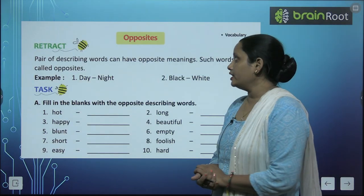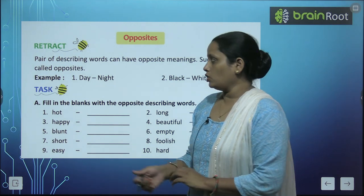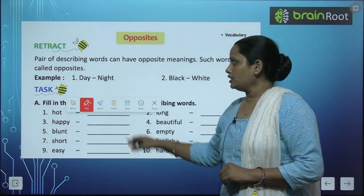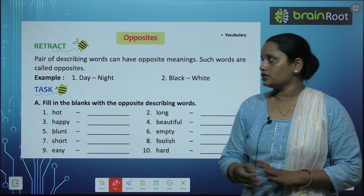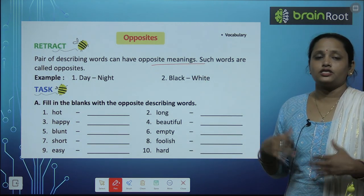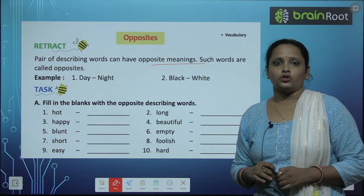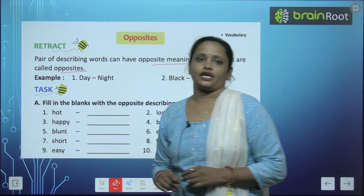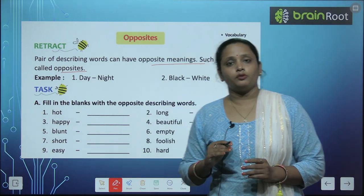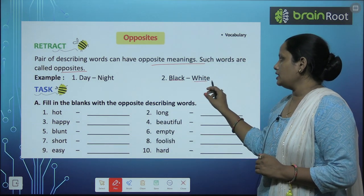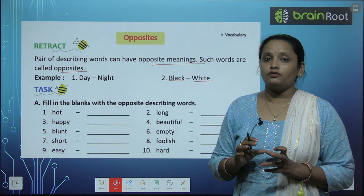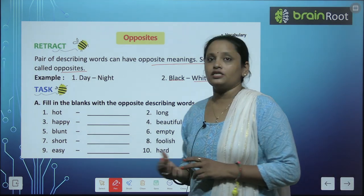Now children, let's learn opposites. Do you all know what opposites are? Opposites are words — these are pairs of describing words that have opposite meanings. Means ulta. Such words are called opposites. Aise words ko hum opposites kehte hai. Jaise ki day — and the opposite of day is night. Day ka opposite night hota hai. Aise hi black ka opposite hai white. Toh yahan pe hum kuch describing words ke opposites paddhenge.